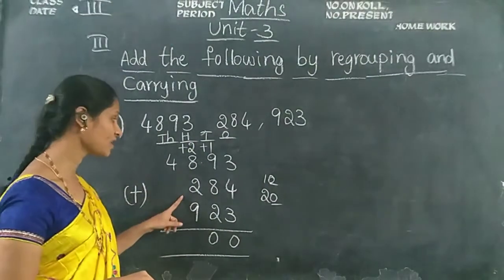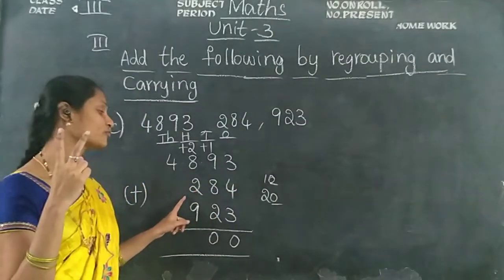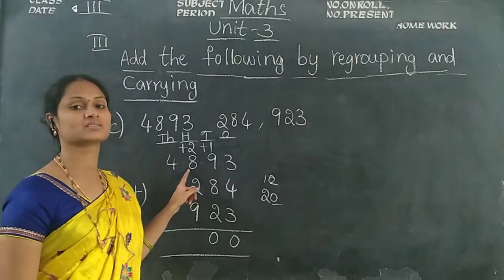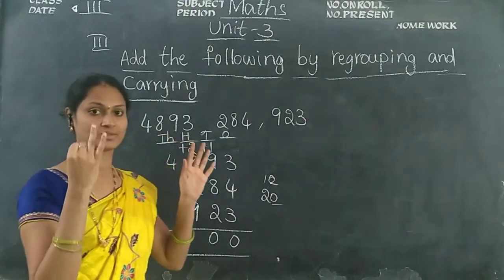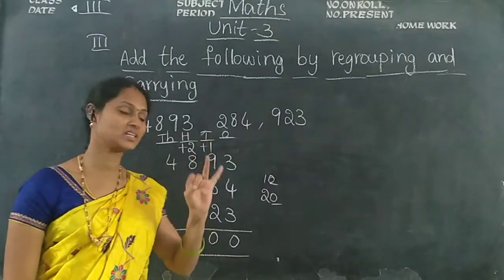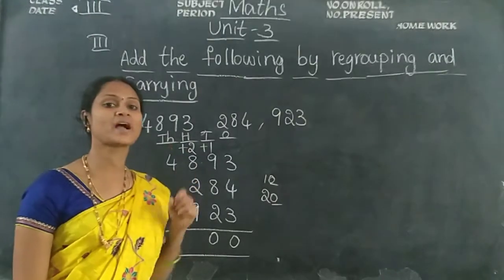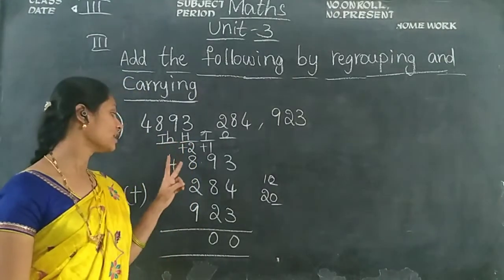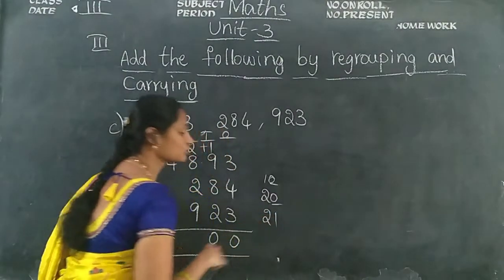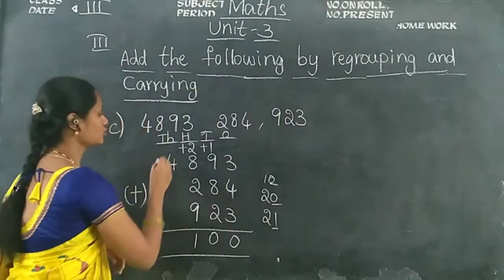Now we add the hundreds place. Keep 9 in your mind, take 2 fingers: 9 after 10, 11. Keep 11 in your mind, open 8 fingers: 11 after 12, 13, 14, 15, 16, 17, 18, 19. Then 19 plus 2 — keep 19, open 2 fingers: 19 after 20, 21. So 21 is a 2-digit number — write 1 in the hundreds place and carry 2 forward to the thousands place.